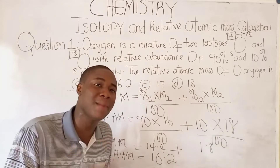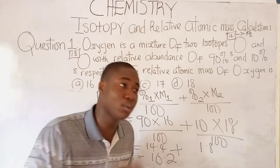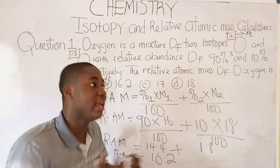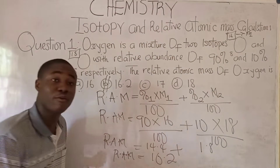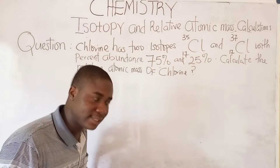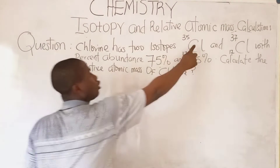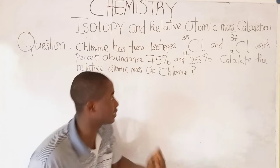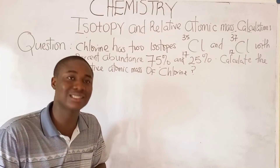Now, for other cases where you can see two options not having a whole number, you have to solve using this formula to get the correct answer. I'll bring another question for you to solve and provide the answer in the comment section below. The question is: chlorine has two isotopes — chlorine-35 and chlorine-37 — with percentage abundances of 75% and 25% respectively. Calculate the relative atomic mass of chlorine using the formula given.